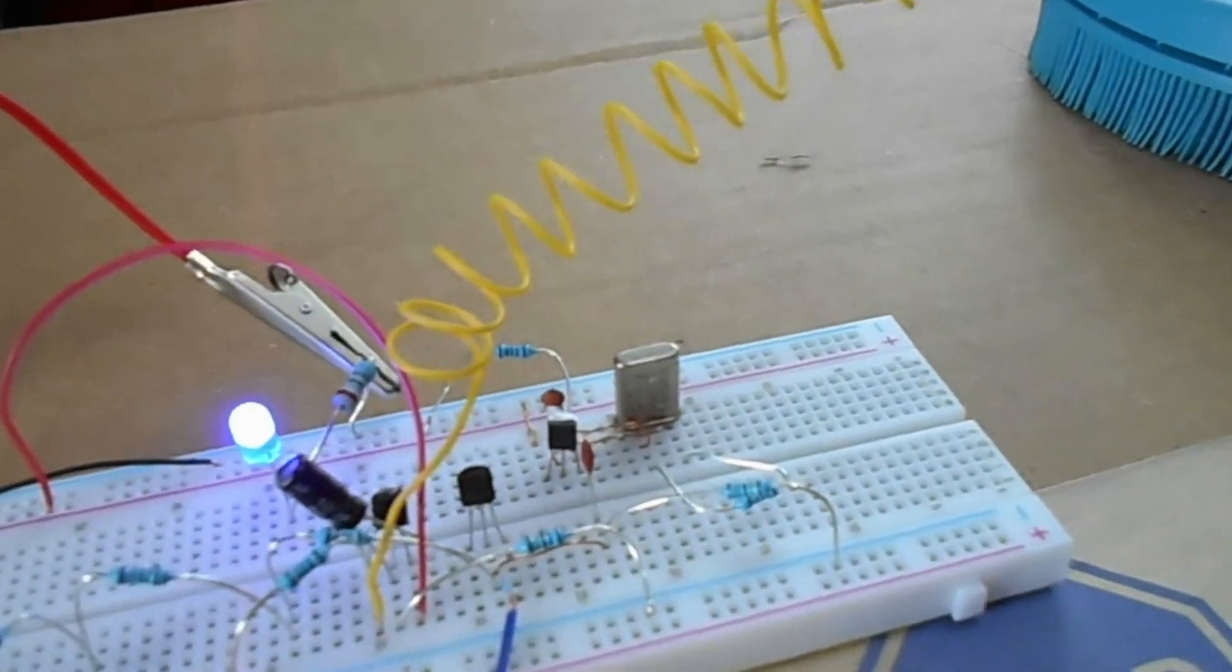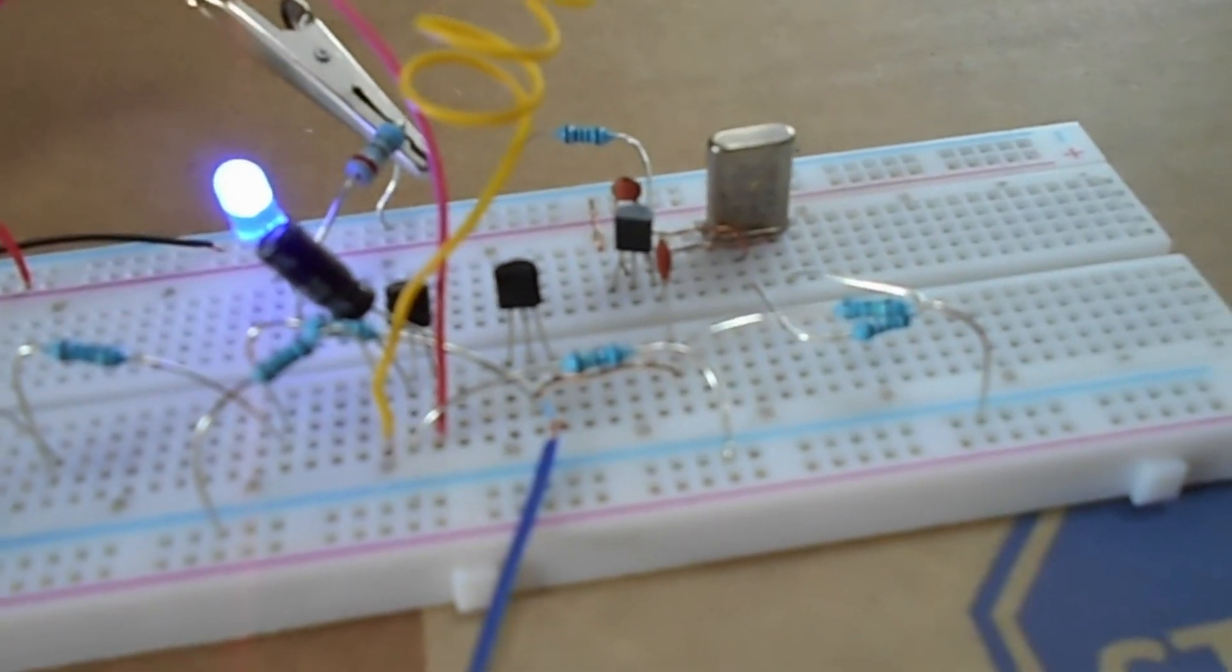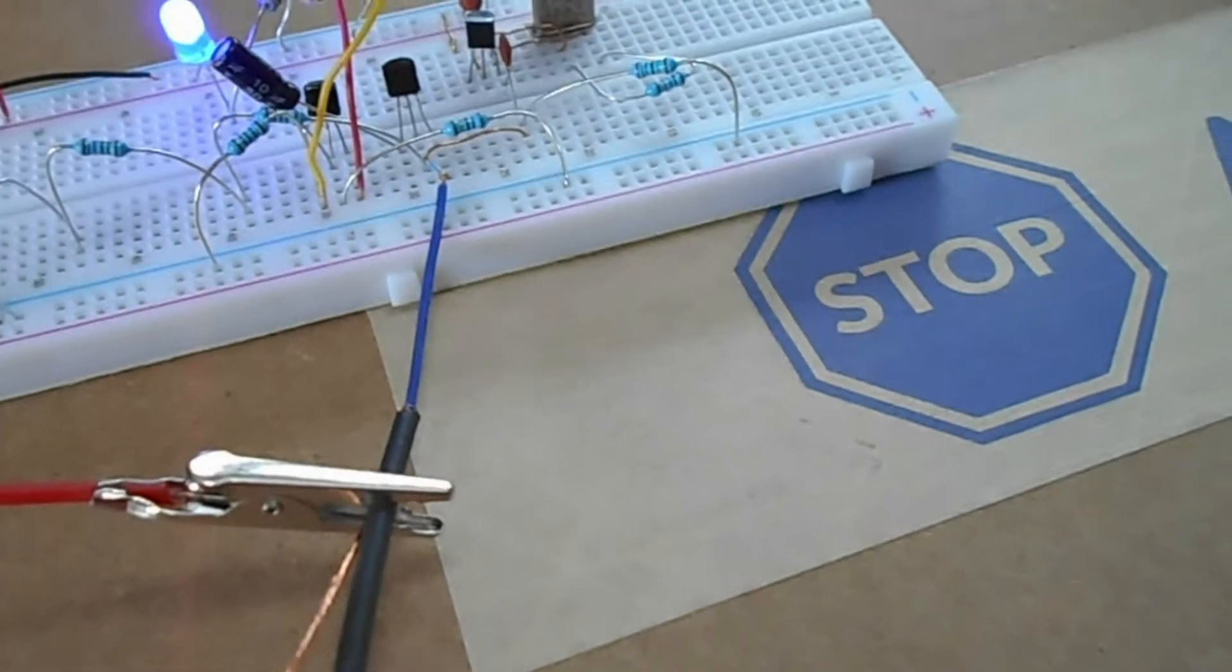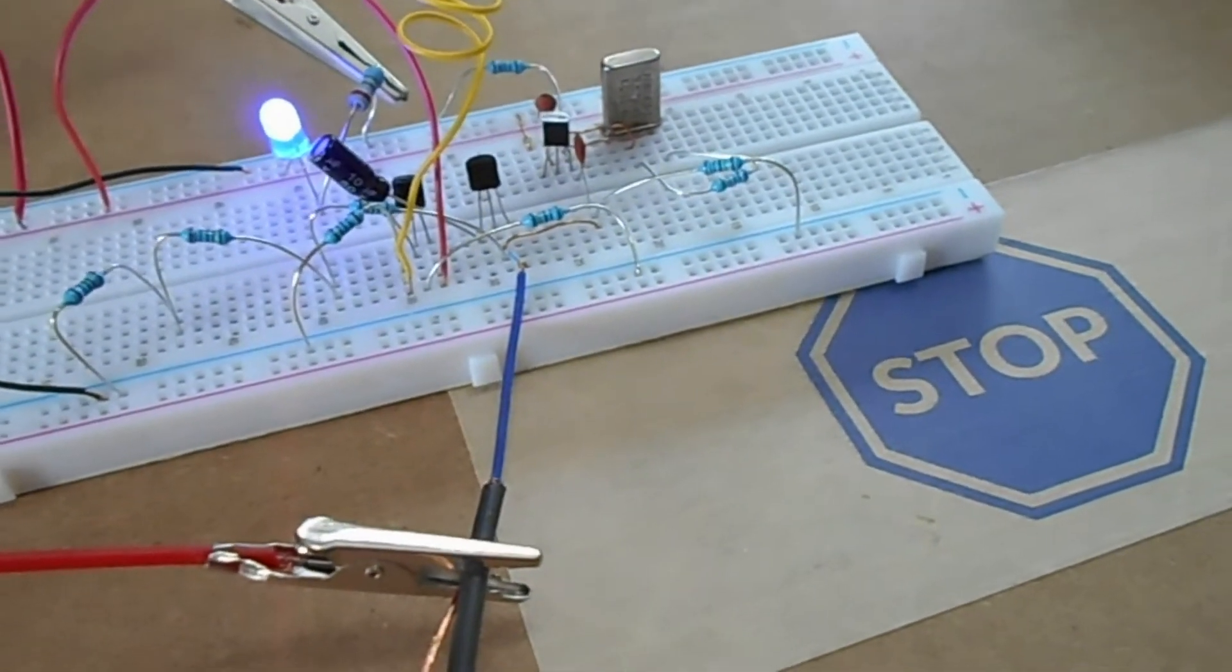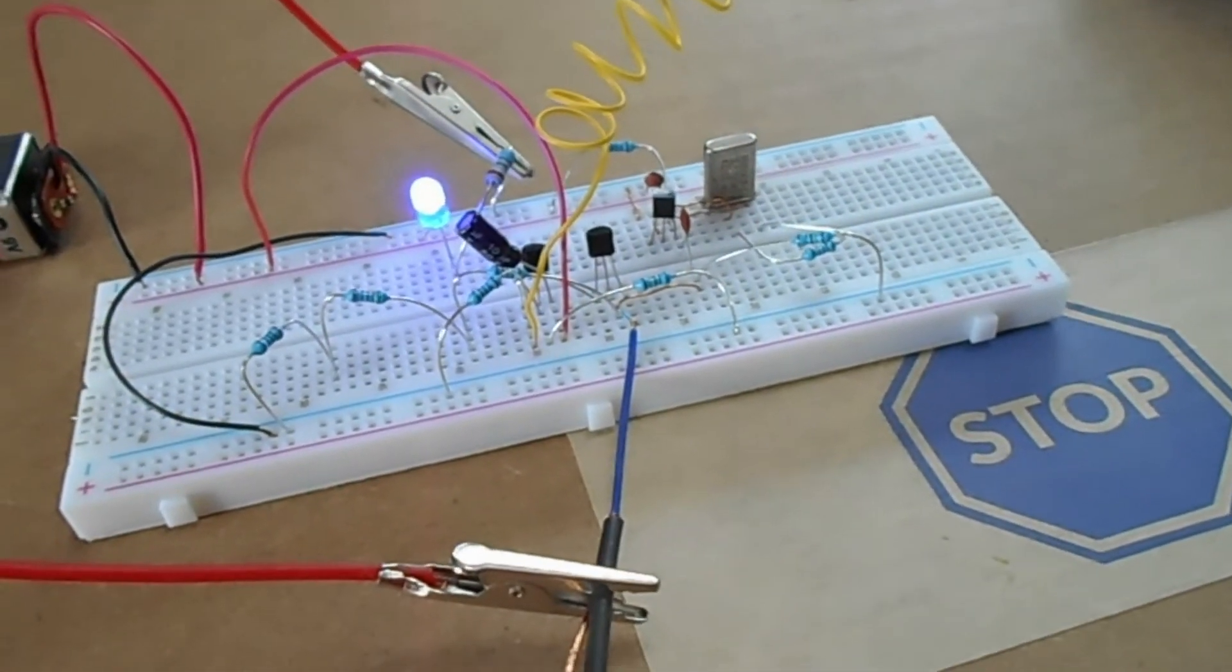It takes the oscillation from the crystal generated by the Colpitts oscillator and uses that to modulate my audio coming in here. It amplitude modulates it, so it makes AM. Essentially the output is an RF signal.